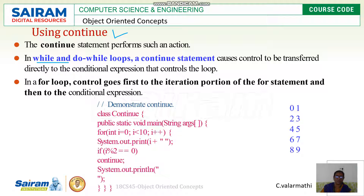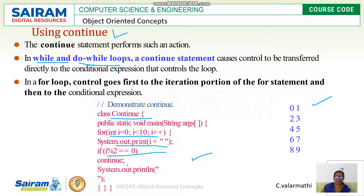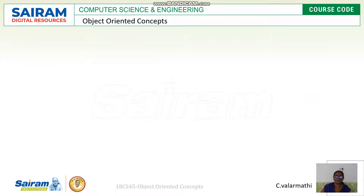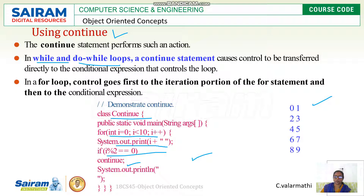The continue statement works in while loops or do-while loops. For example, in a class named Continue with a for loop printing i values — a modulo operator condition is given, and when met, continue skips the remaining statements in that iteration and continues the rest of the program. That is the continue statement. I hope this video is understandable — see you in the next video. Thank you.